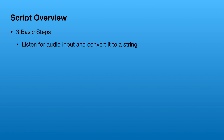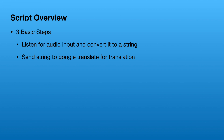This script is actually pretty simple — it only has three basic steps. The first step is to listen for audio input using your microphone and convert that audio into a string, which is just text. The second step is to send that text to Google Translate for translation — you're using Python to pass along the text to Google to translate it into the language of your choice.